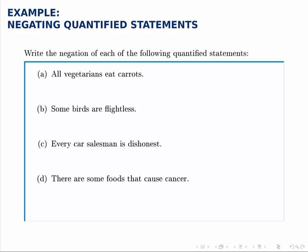In this example, we're given four quantified statements. Notice the quantifiers: 'all' in the first statement, 'some' in the second one, 'every' — which is just another variation of 'all' — and 'some' in the last statement. We're told to write the negation of each of these quantified statements.